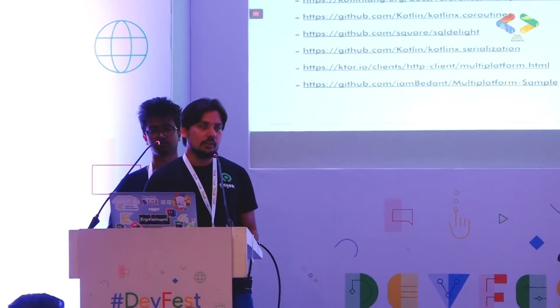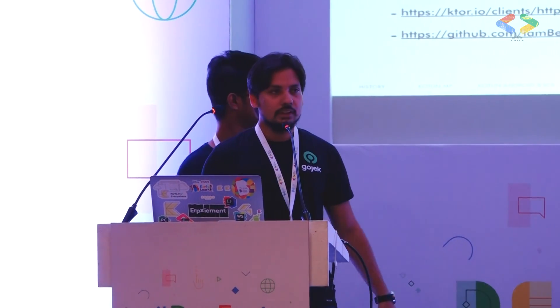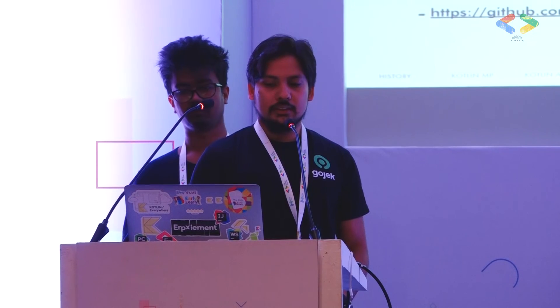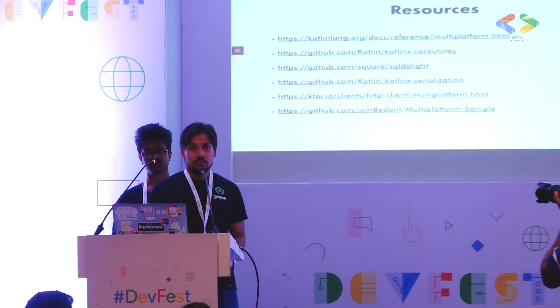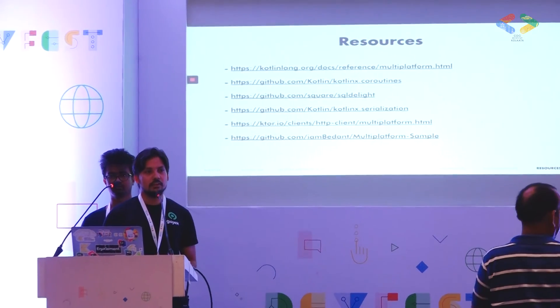Here are some documentation links and libraries: Kotlin's Multiplatform documentation, the Coroutines library, Square's SQLDelight library, Kotlin Serialization, and Ktor. The last link is the code sample from this presentation. Also, Square has recently announced they're going to build a lot of multiplatform libraries — OKHttp will soon become multiplatform and they've already started work on that. So the future is great and a lot of companies are depending on it.